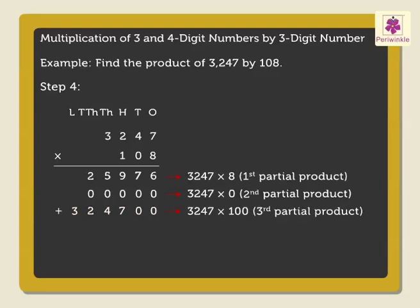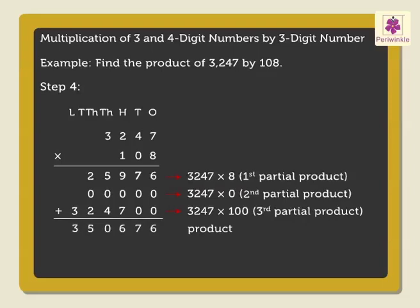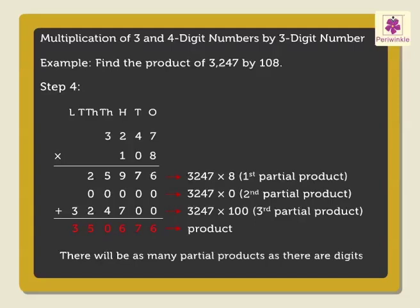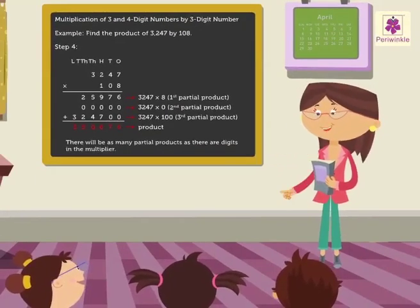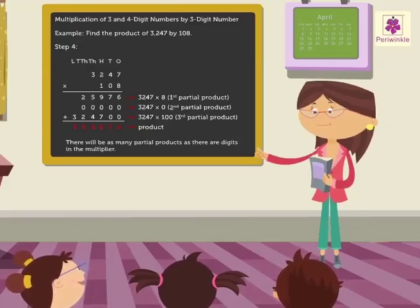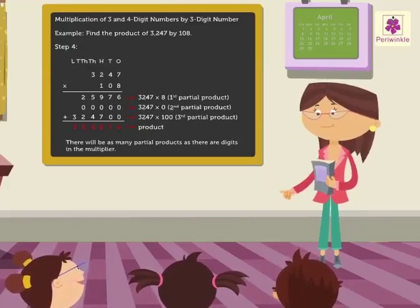Now add the 3 partial products obtained, that is 25,976 plus 0 plus 3,24,700, to get the answer which is equal to 3,50,676. Remember, kids, there will be as many partial products as there are digits in the multiplier. Wasn't it easy learning multiplication of 3 and 4 digit numbers by a 3 digit number?